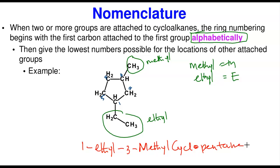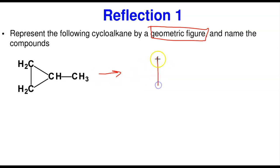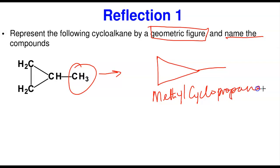First reflection: represent the cycloalkane by a geometric figure. Cyclopropane is a triangle, and if it has one methyl group attachment, we draw the triangle with a line for the methyl group. Since there's only one attachment, we don't need to specify position. The name is simply methylcyclopropane.